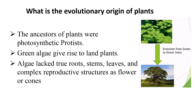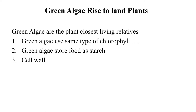What is the evolutionary origin of plants? The ancestors of plants were photosynthetic. Green algae gave rise to land plants. Green algae are probably most similar to the ancestor of plants, but algae lack true roots, stems, leaves, and complex reproductive structures such as flowers and cones.